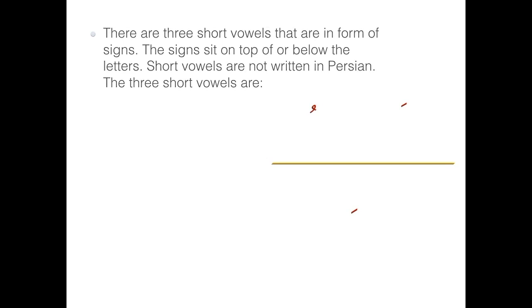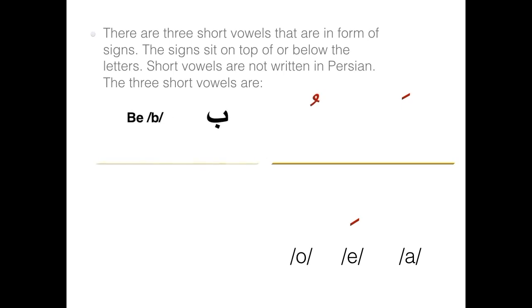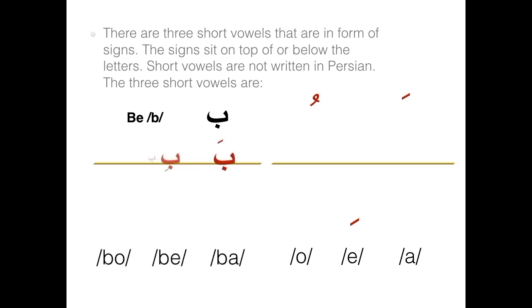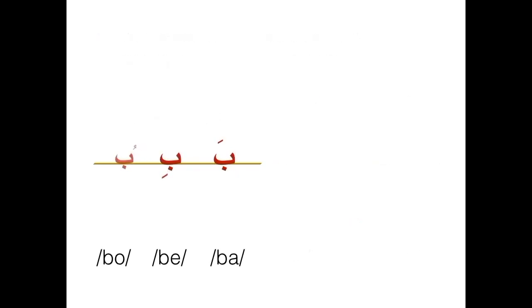The three short vowels are: 'a', 'e', and 'o'. Look at these examples: ba, be, bo.